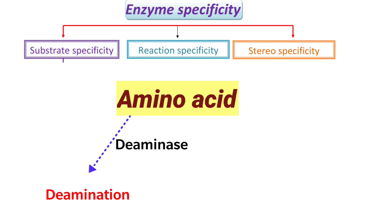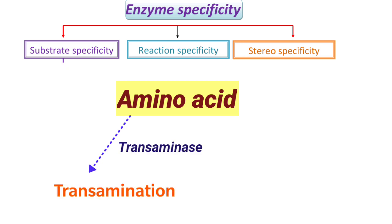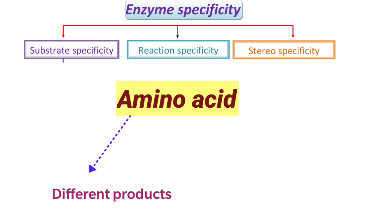If you want decarboxylation, then you have to use decarboxylase. If the amino acid has to undergo transamination, then you have to use a transaminase. So the same amino acid produces different products when different enzymes are used.